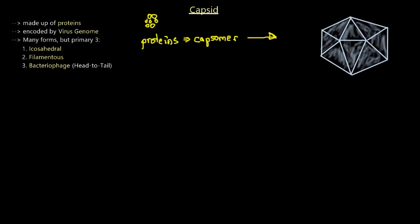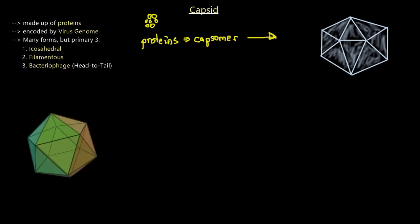There are many forms of capsids, but we typically classify them into three primary forms: icosahedral, filamentous, and bacteriophage — the head-to-tail structure — which is the most common one that everybody typically talks about.